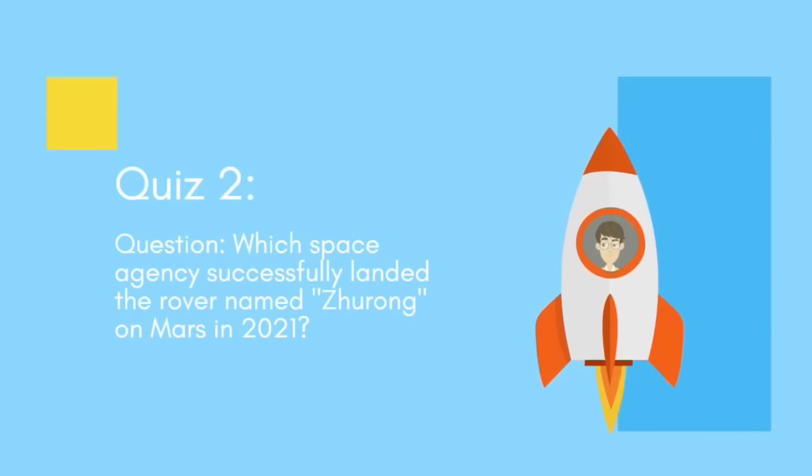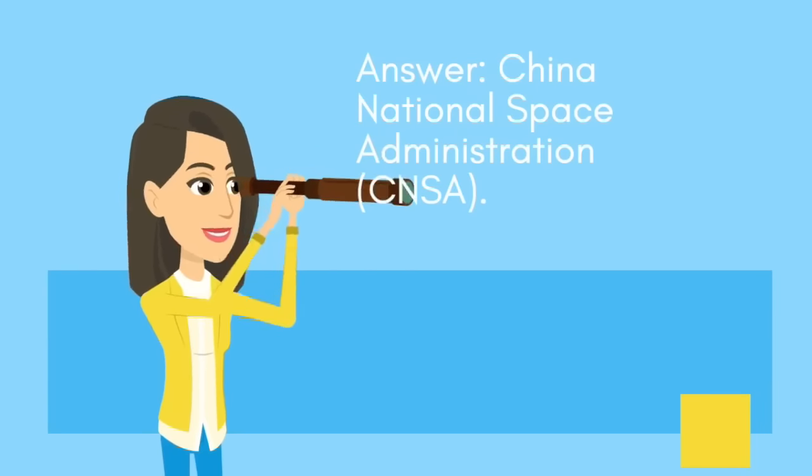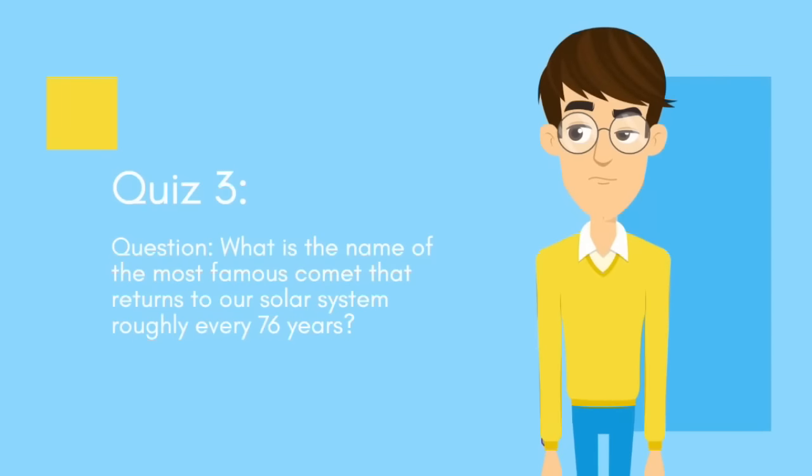agency successfully launched the rover named Zhurong? Answer: China National Space Administration (CNSA). Question 3: What is the